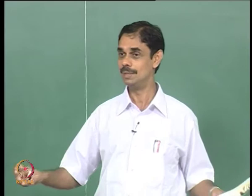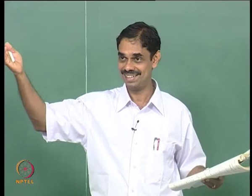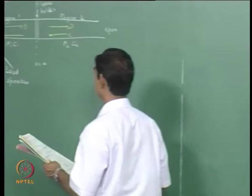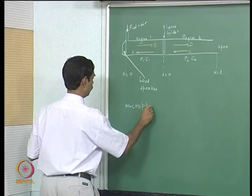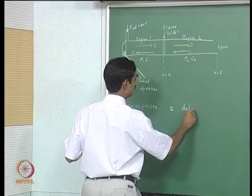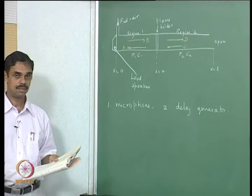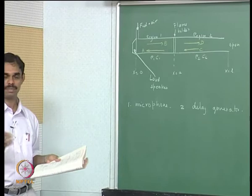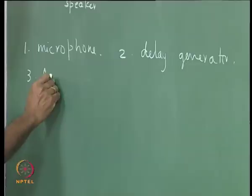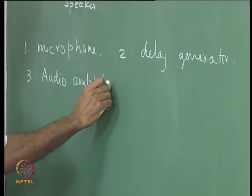If everything is stable and then you turn on the loudspeaker, the sound will come up - we do not want that. So we have to know what is happening. We definitely need a microphone and we need a delay generator. As pointed out, we need to be able to adjust the time at which the sound comes in, or the phase of the sound. It is more like adjusting the phase, and we need an audio amplifier and an actuator.